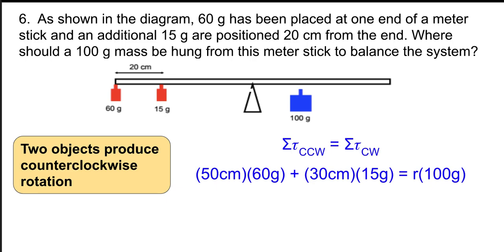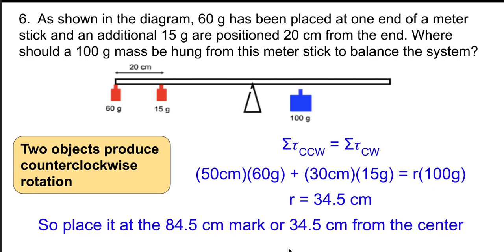And then on the other side, we're trying to figure out where to put the blue mass. So that's our unknown r. And so everything on the left has to balance r times 100. So notice I'm not combining together the two masses because they're not at the same location, but I am combining the two torques. This comes out to be 34.5 centimeters, so we could say 34.5 centimeters from the center, or we could say it's at the 84.5 centimeter mark by adding 50.